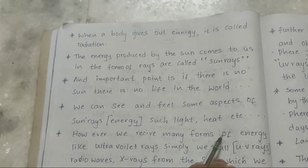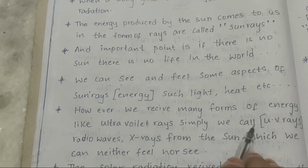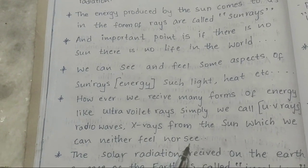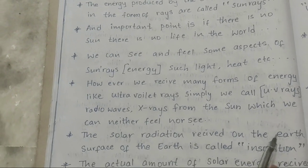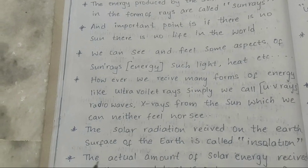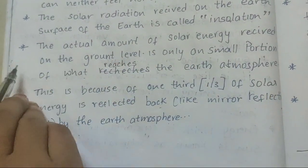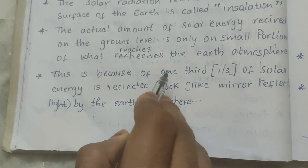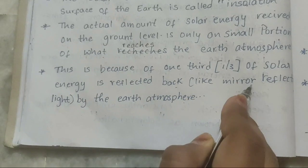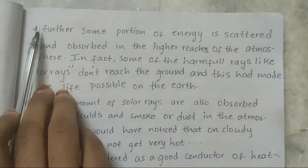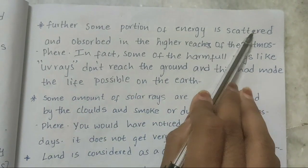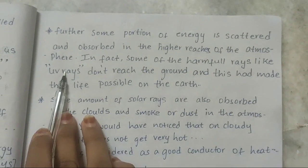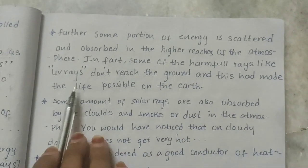However, we receive many forms of energy like ultraviolet rays — also called UV rays — radio waves, and X-rays from the Sun, which we can neither feel nor see. The solar radiation received on the surface of the Earth is called insolation. The actual amount of solar energy received at ground level is only a small portion of what reaches the Earth's atmosphere. This is because one third of solar energy is reflected back like a mirror by the Earth's atmosphere. Some portion of energy is also scattered and absorbed in the higher reaches of the atmosphere. Some harmful rays like UV rays don't reach the ground, and this has made life possible on Earth.